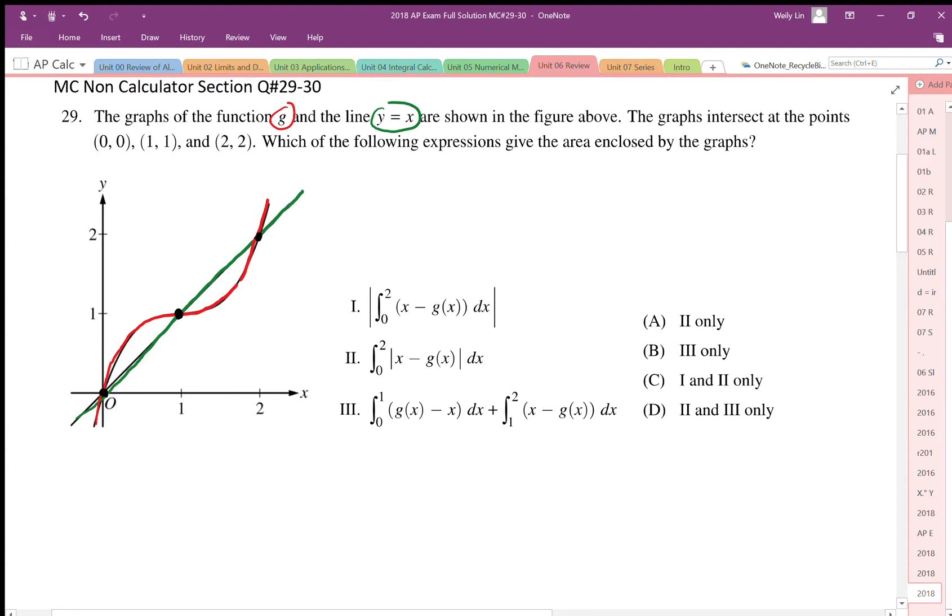Which of the following expressions gives the area enclosed by the graphs? The area means that we need to find the positive height or the positive difference, so we always need to make sure we do upper minus lower. When we take a look at these ones here, this one here we have from 0 to 1 we have the upper function minus the lower function.